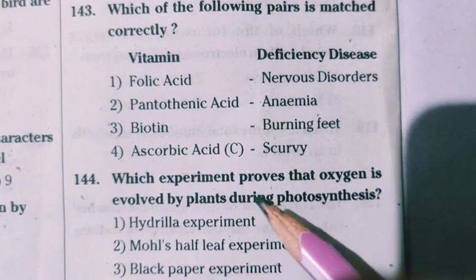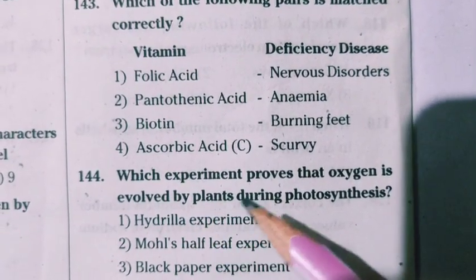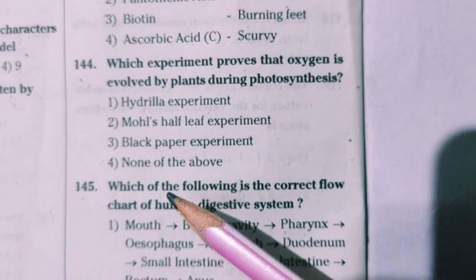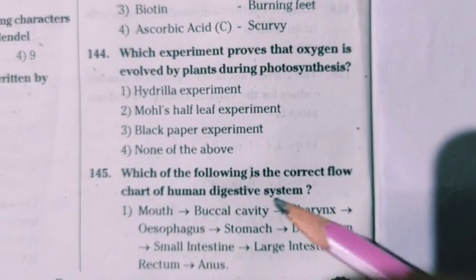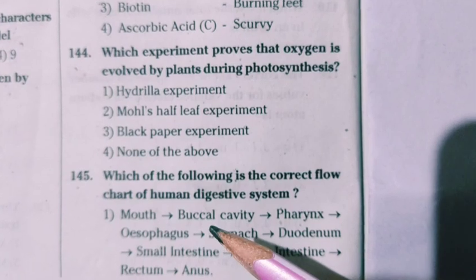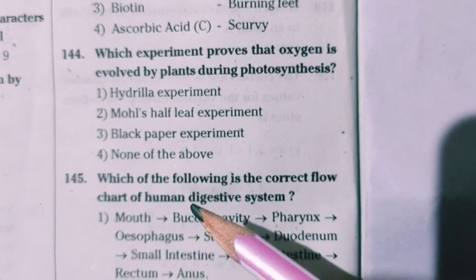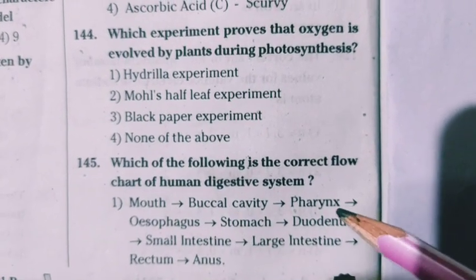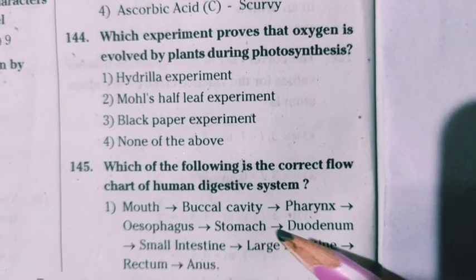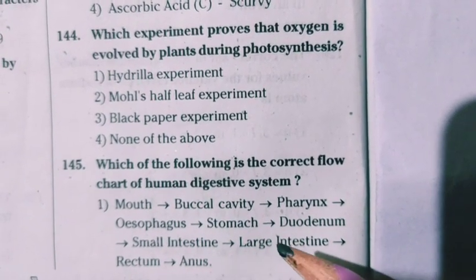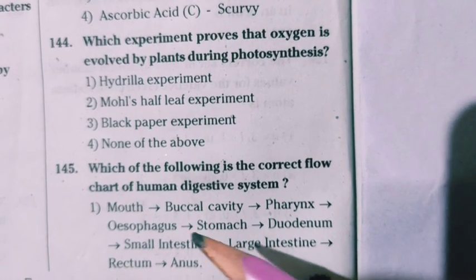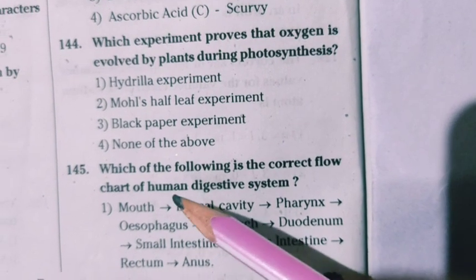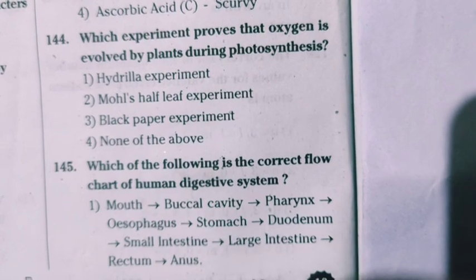Which experiment proves that oxygen is evolved by plants during photosynthesis? It is the Hydrilla experiment. Next question: what is the correct flow chart of the human digestive system? Food starts its digestion in the mouth — buccal cavity, pharynx, esophagus, stomach, duodenum, small intestine, large intestine, rectum, and lastly it enters the anus. This is the correct flow chart of the human digestive system.